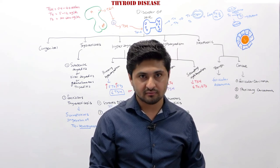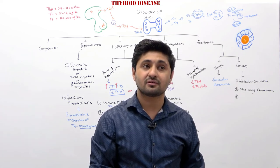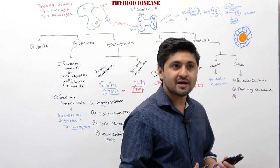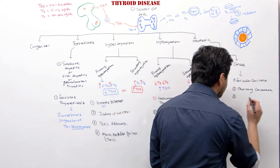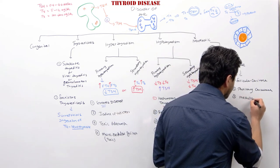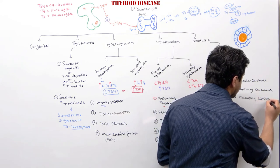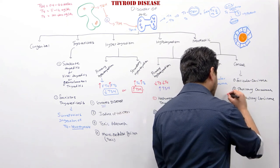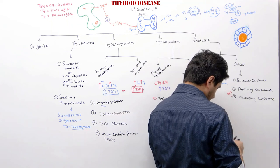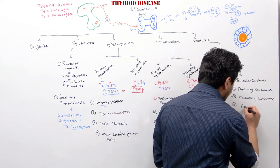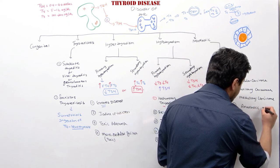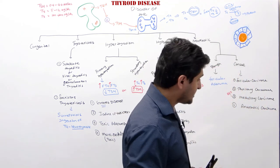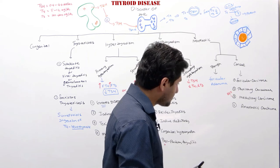The thyroid gland also contains parafollicular C cells, which are derived from neural crest cells and produce calcitonin. Cancer arising from these cells is called medullary carcinoma, and it is associated with RET mutations — a high-yield fact. The fourth type is anaplastic carcinoma, also called undifferentiated carcinoma of the thyroid gland.